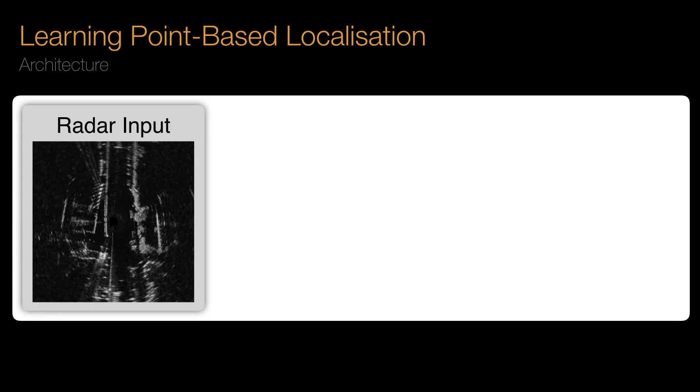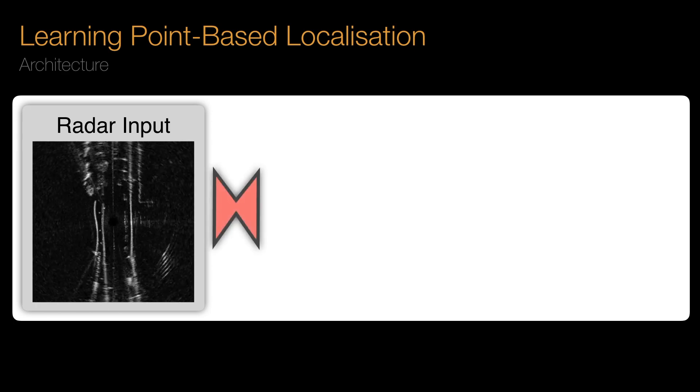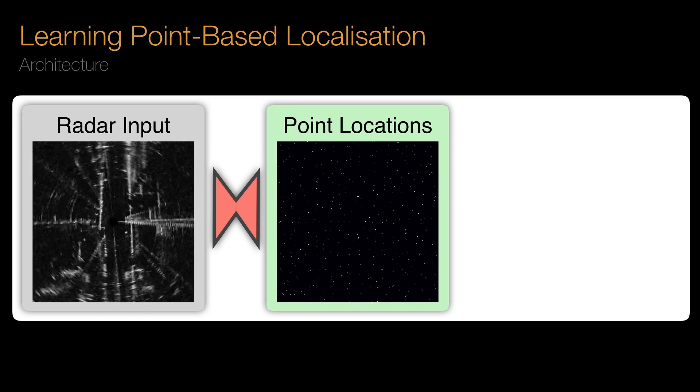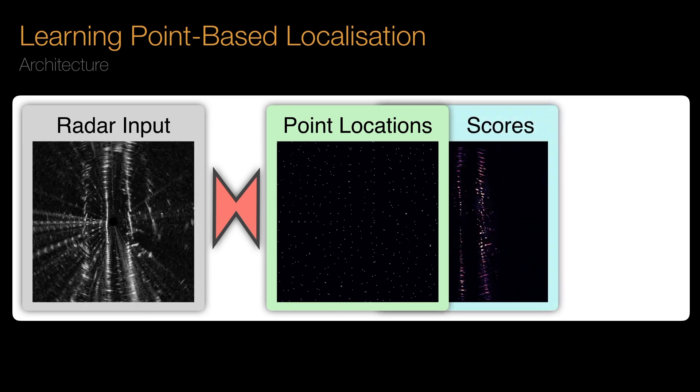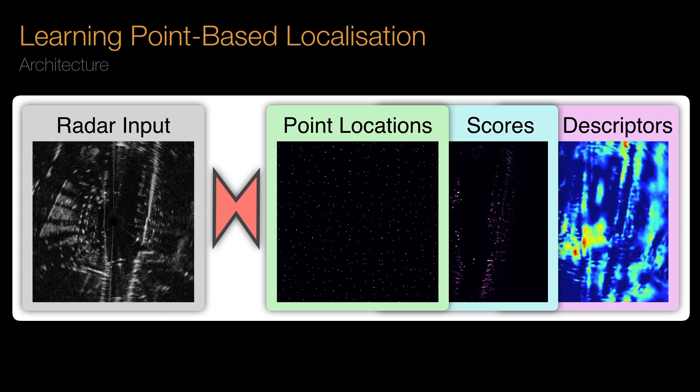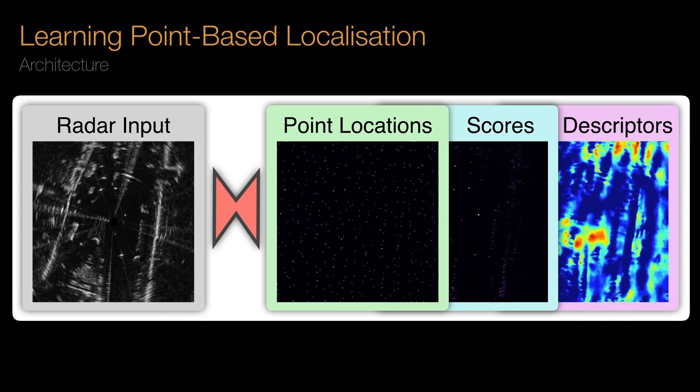In our proposed architecture, for a given radar scan, we pass it through a convolutional neural network and predict keypoint locations across the radar scan, scores indicating how good each point is for motion estimation, and descriptors so that we can associate points from different scans.